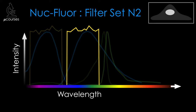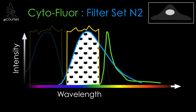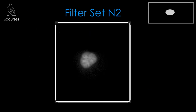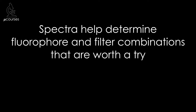Let's see if we can block this bleed-through by using a different filter set to image nukeflor: filter set N2. This set contains the same excitation filter but a different emission filter. The emission filter transmits less of the emission from nukeflor than the previous one, but still gets the majority of it. Unlike the previous emission filter, this one blocks the emission from cytoflor. So when images are collected using filter set N2, we no longer see signal in the cytoplasm. Examining spectra is useful for choosing fluorophores and filter sets less likely to result in bleed-through.